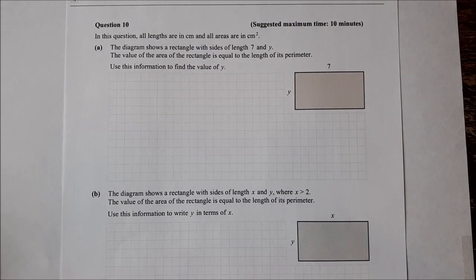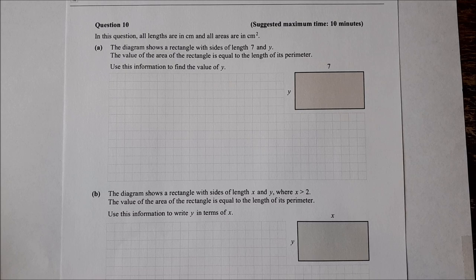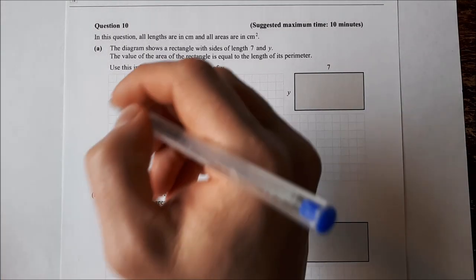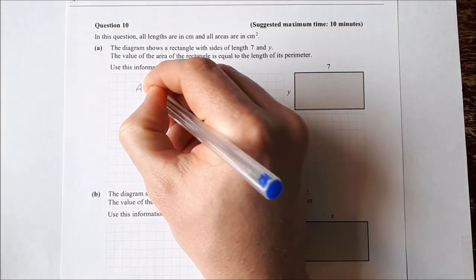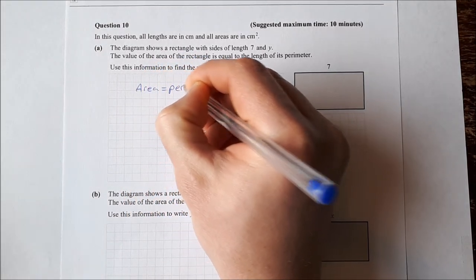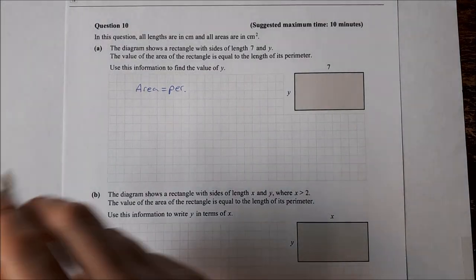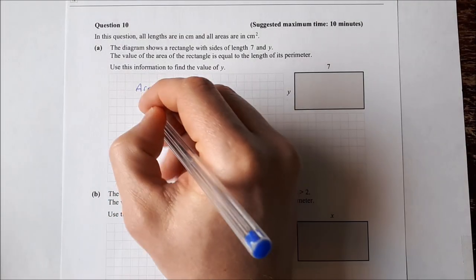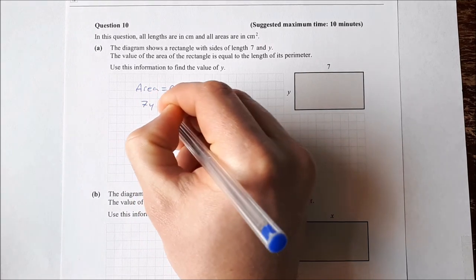Okay, so the last question I'm going to look at here from 2016. In this question, all lengths are in centimeters and all areas are square centimeters. The diagram shows a rectangle with sides of length 7 and y. The value of the area of the rectangle is equal to the length of its perimeter. Use this information to find the value of y. So what it's telling me is that area is equal to perimeter. Well, I can calculate the area. Area is just 7 times y. So area is 7y. The perimeter, then just adding them all together.